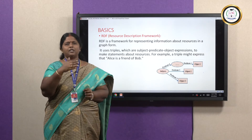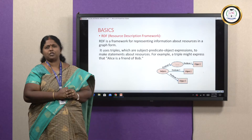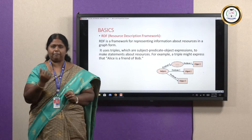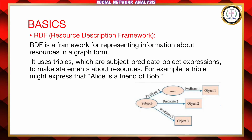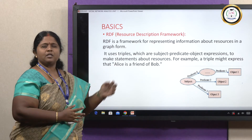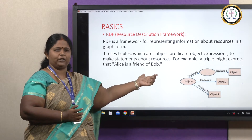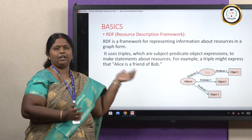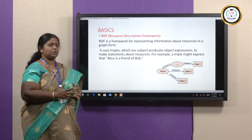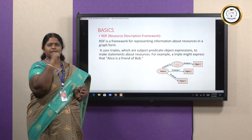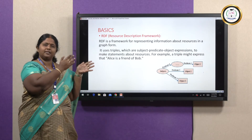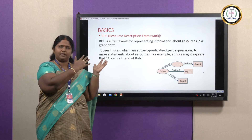There are some basic terminologies we should know. The first one is the Resource Description Framework. When we say the Resource Description Framework, it is going to be a set of triplets — a subject, predicate, and object. For example, Alice is a friend of Bob. Alice is going to be my subject, Bob is going to be the object, and the predicate is 'is a friend of.' This is how RDF works — defining the relationship between the subject and the predicate — and once this is defined, images can be automated in a better manner.